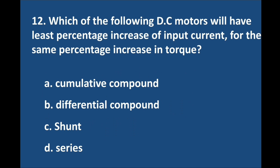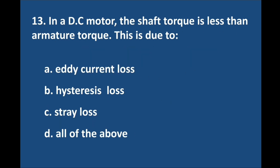Question number 12. Which of the following DC motors will have the least percent increase of input current for the same percent increase in torque? Question number 13. In a DC motor, if the shaft torque is less than armature torque, this is due to — answer is option C: Stray loss.